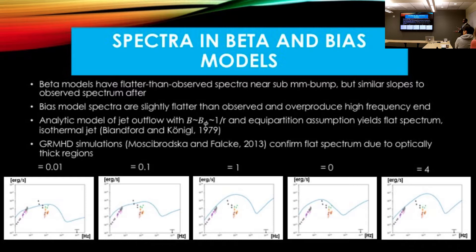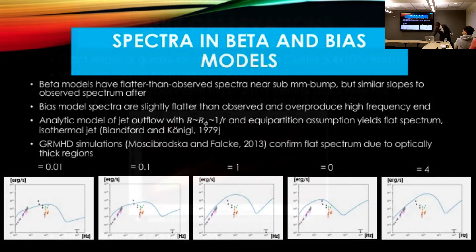The spectra in the bias and beta models have the opposite problem: for the large part they are flatter than the observed spectra. These are beta equals 0.01, beta equals 0.1, beta equals 1, n equals 0, and n equals 4 bias models. We account for this in a phenomenological picture where the outflows contribute most to the emission; a blend of conical outflow can account for the flatness of the spectrum at equal partition, where the constant beta models are equal-partition models. These lead to flat spectra and isothermal jets, as shown in GRMHD simulations.